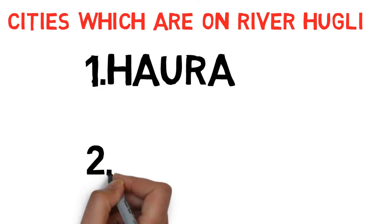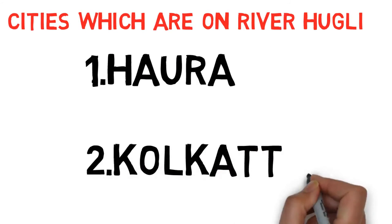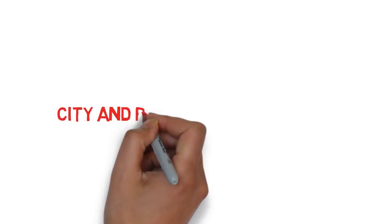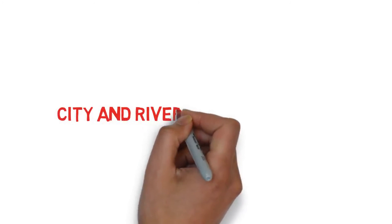The first one is Howrah, the second one is Kolkata. These are the two cities which are located on River Hooghly, and these two cities belong to the state West Bengal. Howrah and Kolkata are the two cities located on River Hooghly. But how to remember these two cities and River Hooghly? Let us see the trick.